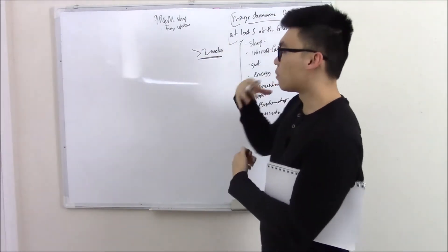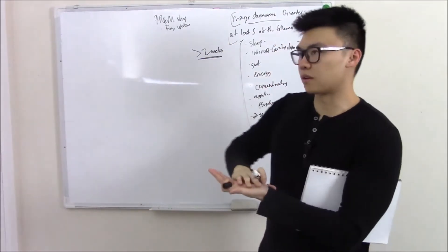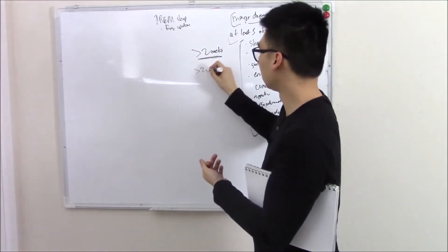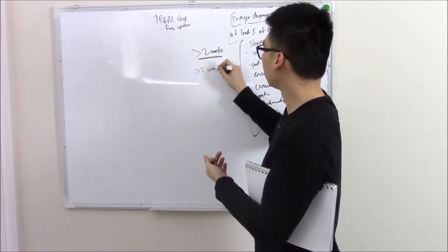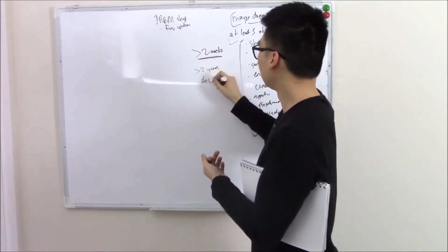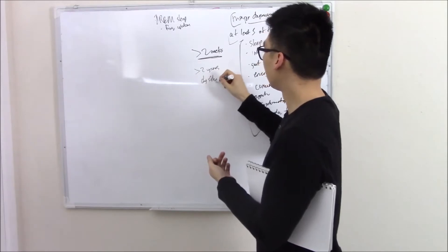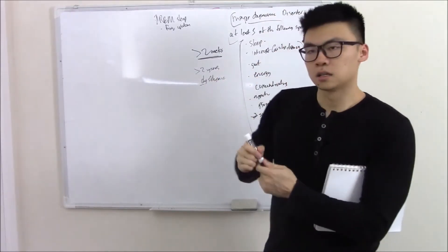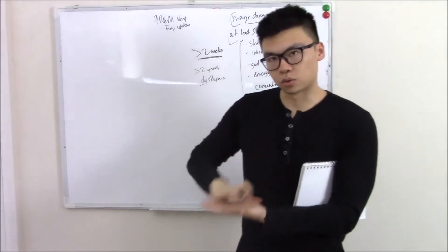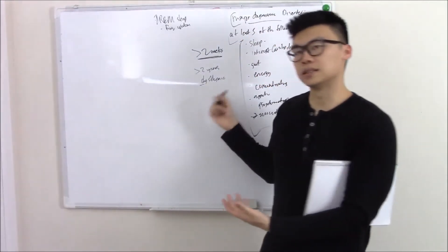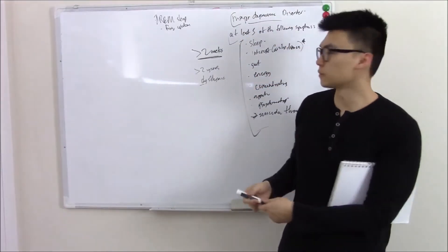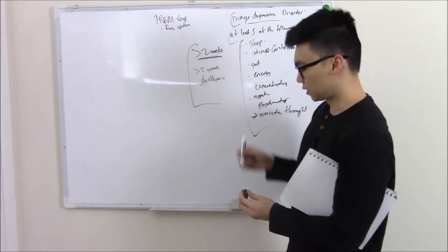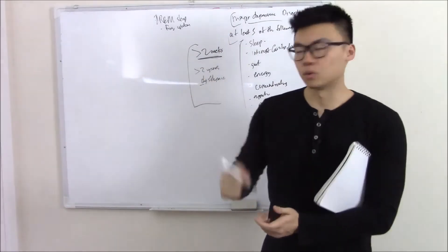If you have a milder form of these symptoms that has been going on for over two years, we call that dysthymic disorder — a milder, more chronic form. See how time frame plays a role. While we're talking about different types of depression, let's talk about some other ones.